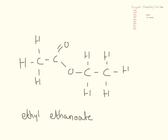The only ester you actually need to be able to name for your GCSE is ethyl ethanoate. It's nice that both parts have the same number of carbons — 'ethyl' is because it has two carbons, and there are two carbons before and after the functional group, which is the bit that makes it an ester.